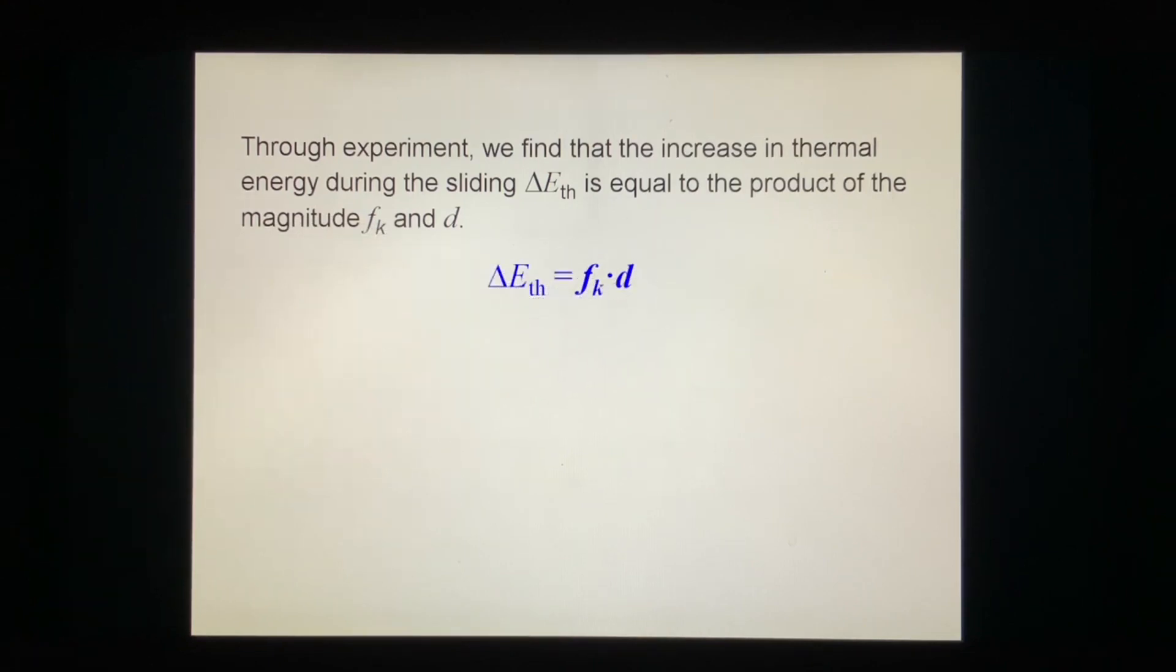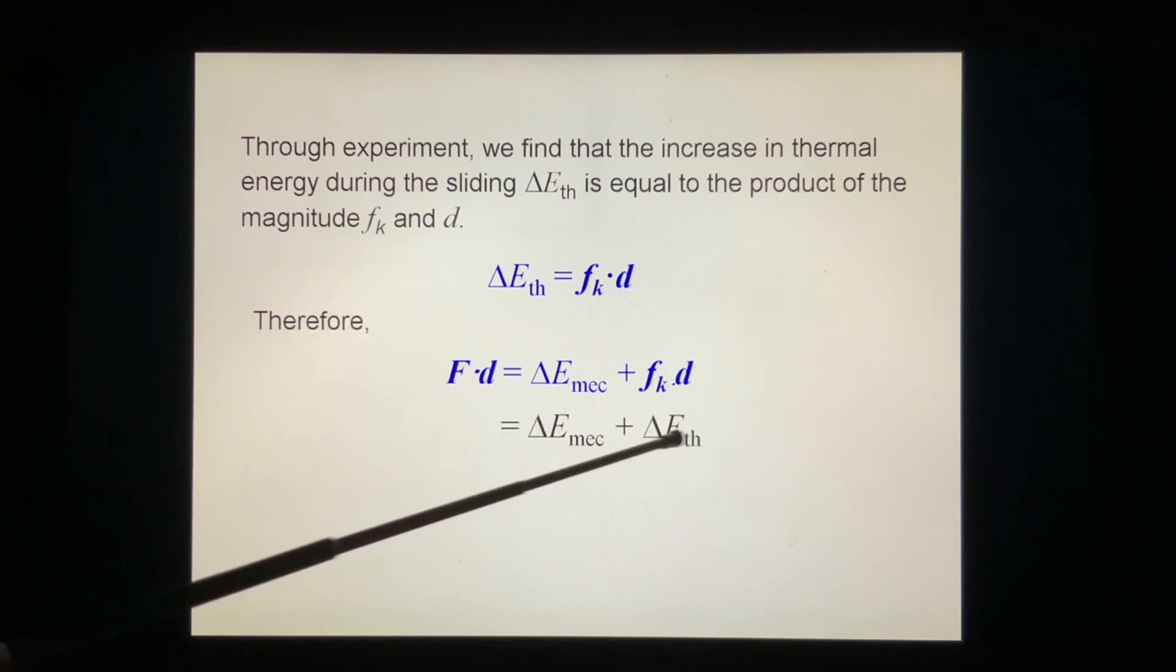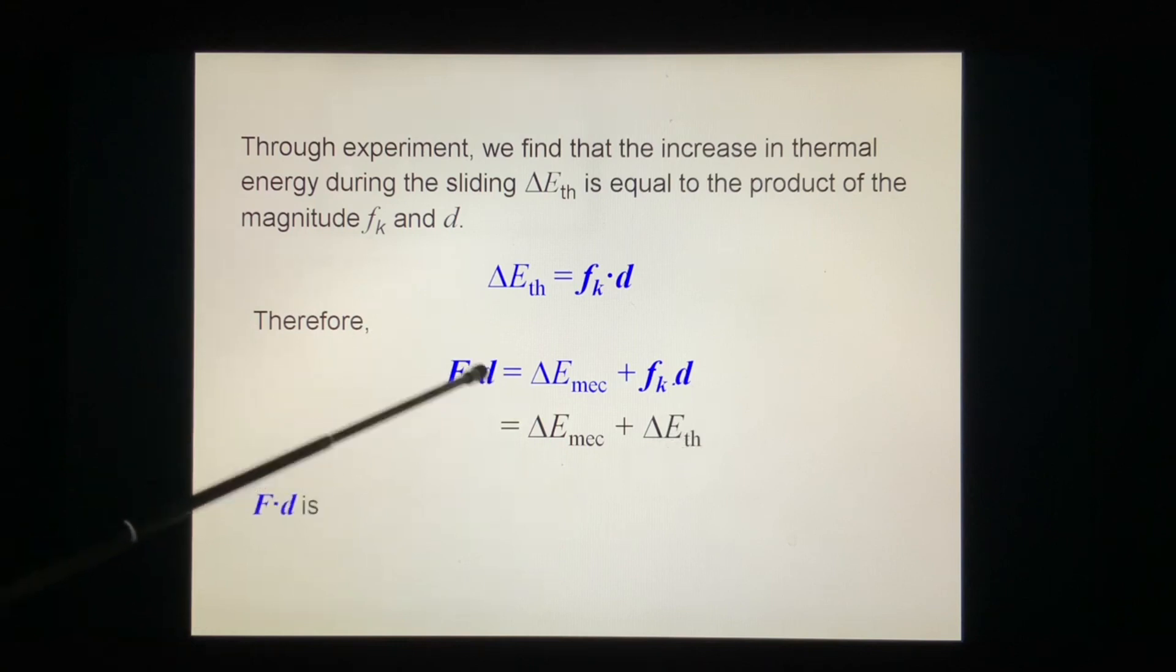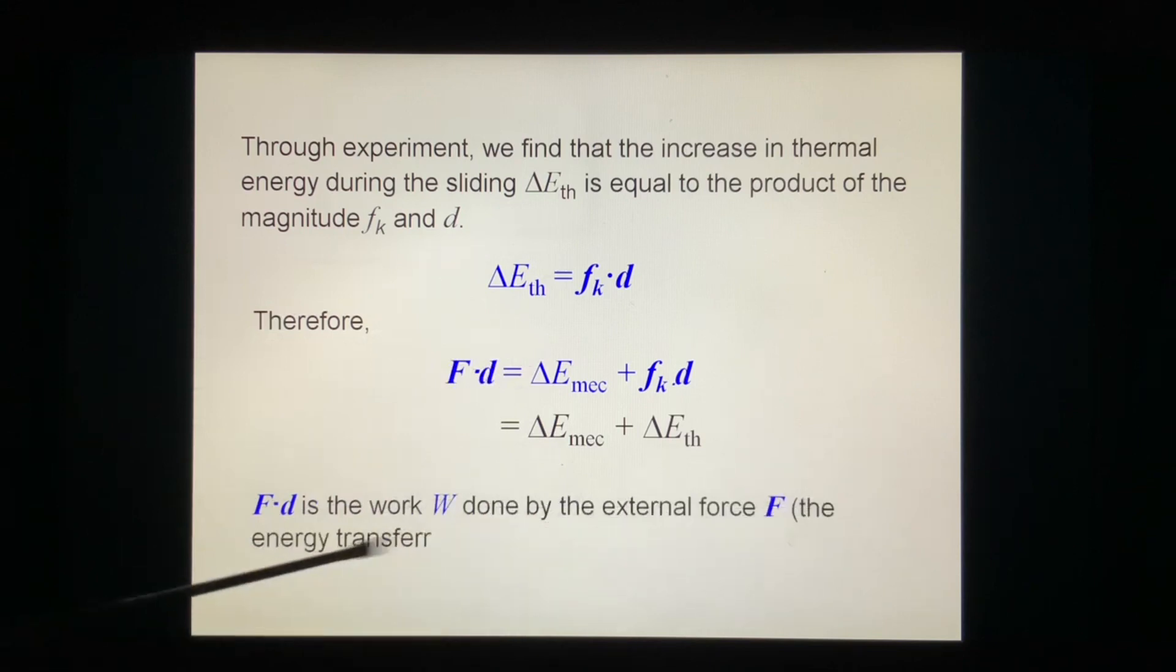And then we rewrite the above equation. Fd = ΔE_mec + f_k·d. We replace this one by ΔE_th. So it becomes Fd equals mechanical energy change and thermal energy change.